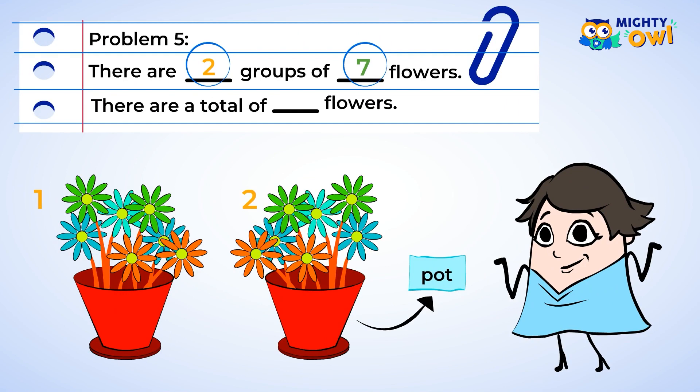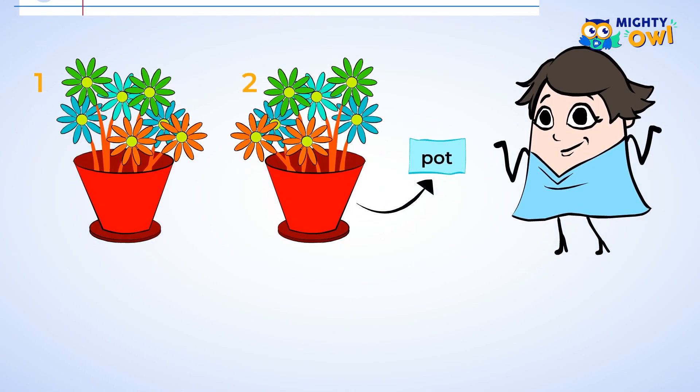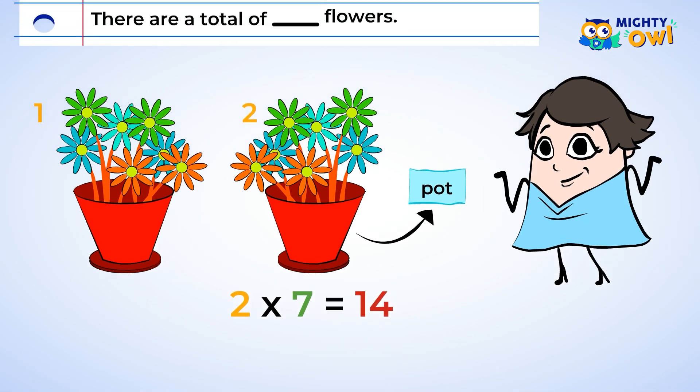When you write this as a multiplication problem, you will get two times seven. Now you can find the total number of flowers. The answer to two times seven is fourteen total flowers.